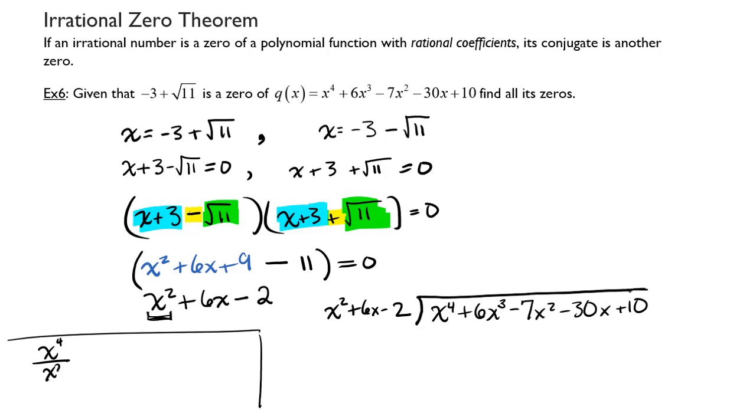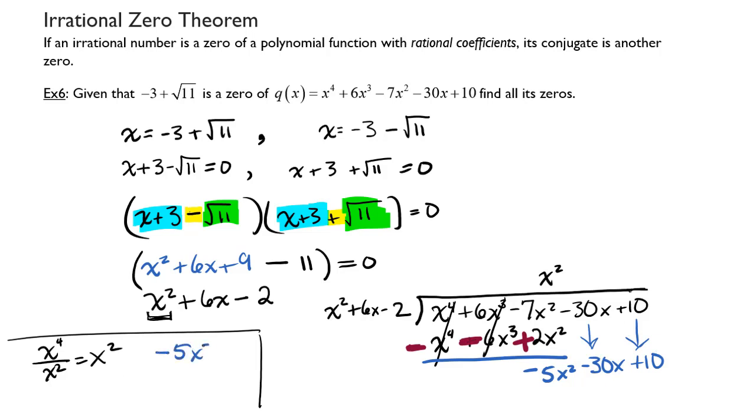Take the first term of my dividend, divide it by the first term of the divisor. That gives me x squared. Put that in my quotient and then multiply that through. That will give me x to the 4th, a plus 6x to the 3rd, and a minus 2x squared. Changing my signs and combining terms, the first two will add to zero, the second two will add to zero, and the last one will be negative 5x squared, dropping the negative 30x down and the positive 10.